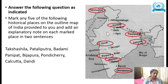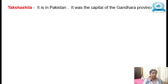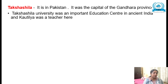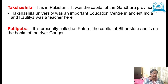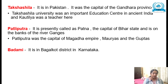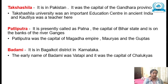After marking each place you have to write an explanation. For Takshashila: it is in Pakistan, was the capital of the Gandhara province, Takshashila University was an important education center in ancient India, and Kautilya was a teacher here. For Pataliputra: it is presently called Patna, the capital of Bihar state, situated on the banks of the river Ganges. Pataliputra was the capital of the Magadha Empire under the Mauryas and the Guptas.